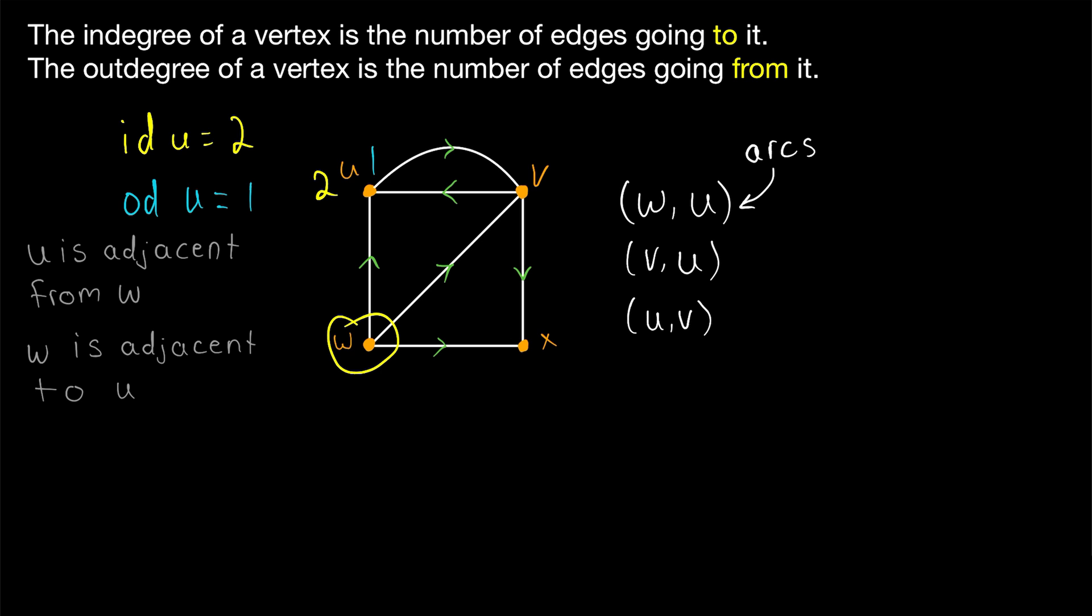What is the in-degree of W? Well, every arc W is incident with is leaving it. So the in-degree of W is zero. There's no arc going to W. On the other hand, the out-degree of W is three, because there are three arcs going out of W. The in-degree of X is two, because there are two arcs going to X. Meanwhile, the out-degree of X is zero. There are no arcs going out of X.